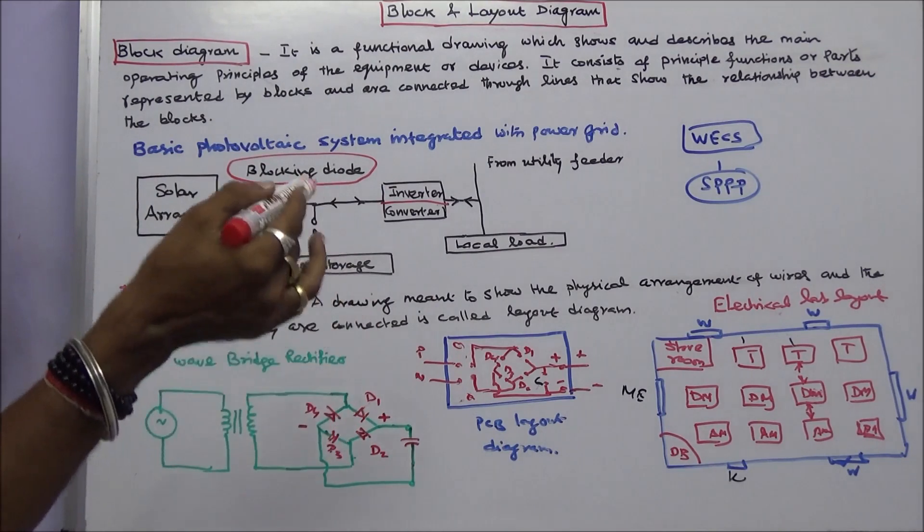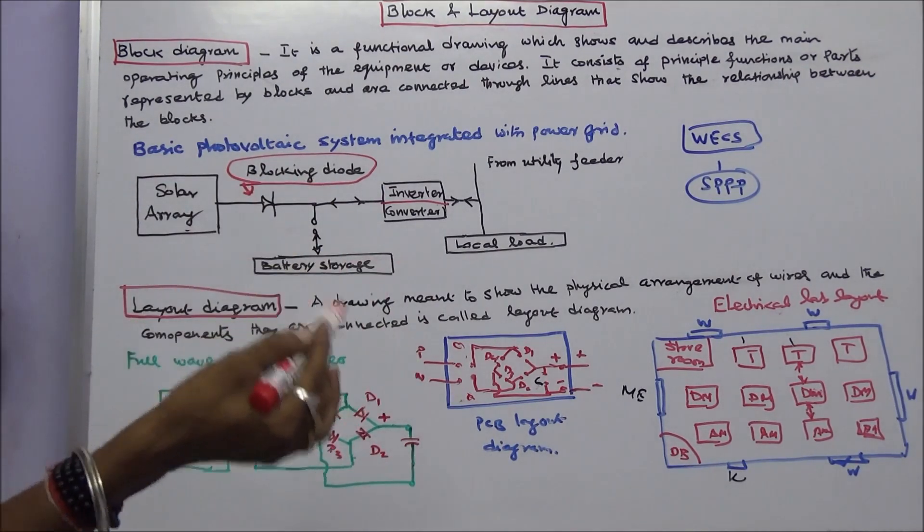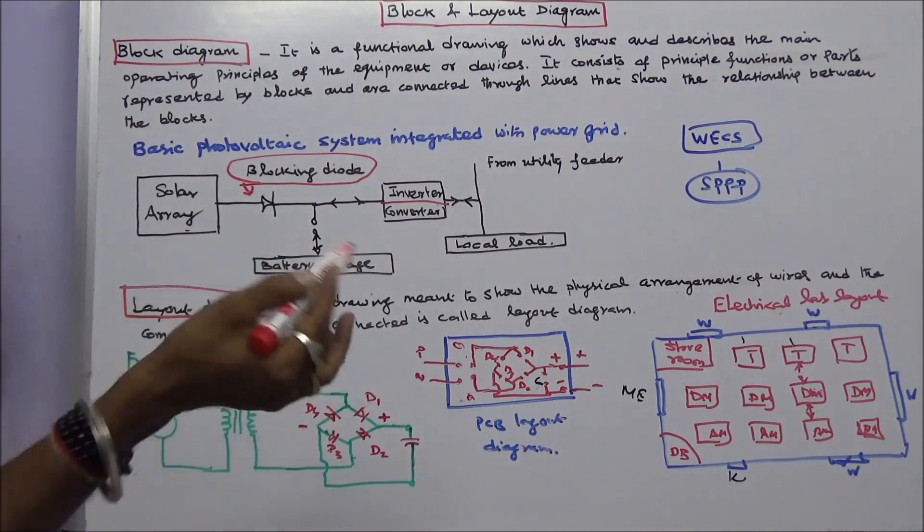SCR module means a snubber circuit is also included. With the help of only one SCR we can't do anything, so we need a module.